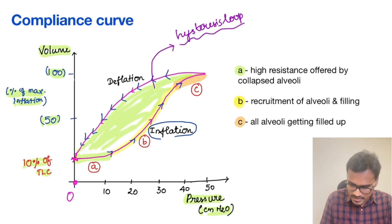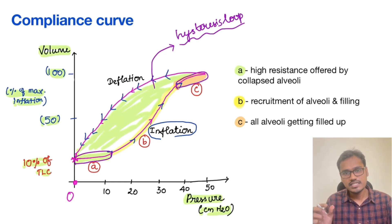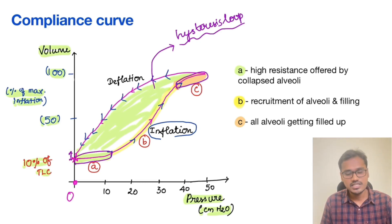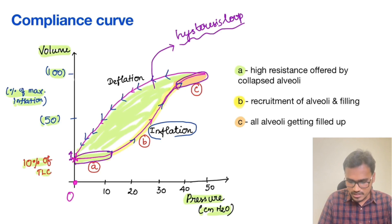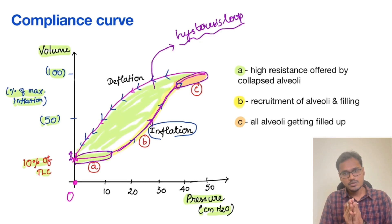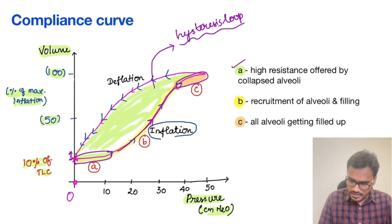During inflation, both the initial part and the final part of the curve are relatively flat — the change in volume with respect to change in pressure is very low. However, the middle portion has a steep slope with a large change in volume per unit pressure. This is because at the start, all alveoli are collapsed, and to open a collapsed alveolus requires a higher force, so the resistance is very high, making the initial curve flat.